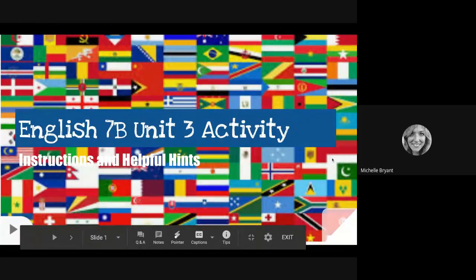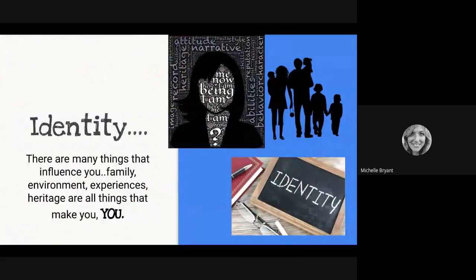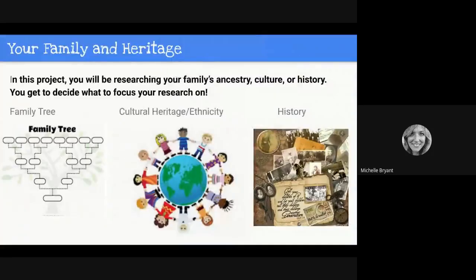Hi there, seventh graders. This is a quick helpful hints video going over your Unit 3 activity in English 7B. This activity is about you and what makes you you — it's about your identity. There are a lot of things that make you who you are. A lot of times we think of family, friends, and hobbies, but it also goes deeper than that. A lot of who you are has to do with your heritage, culture, backgrounds, and the family members you know and even may not know.